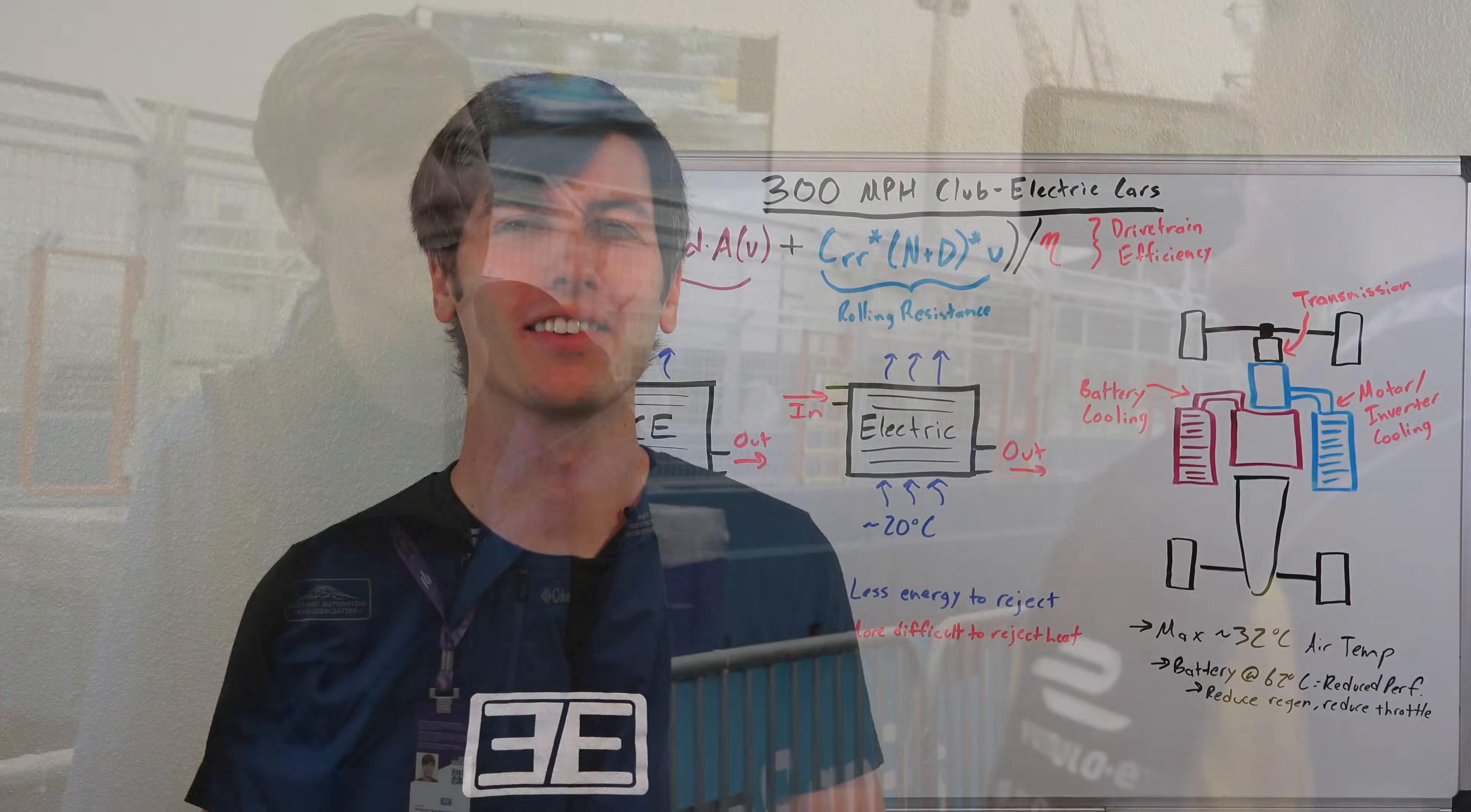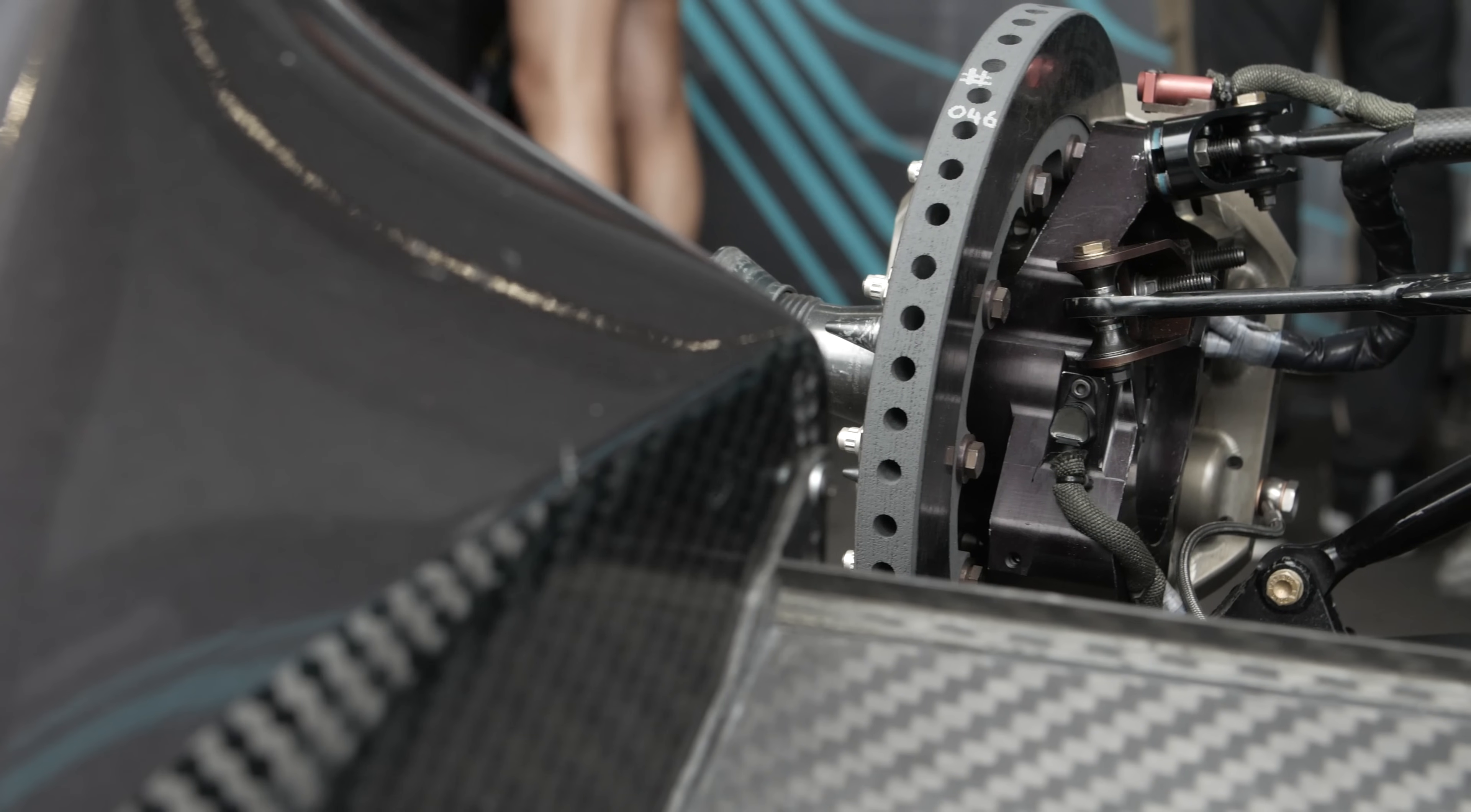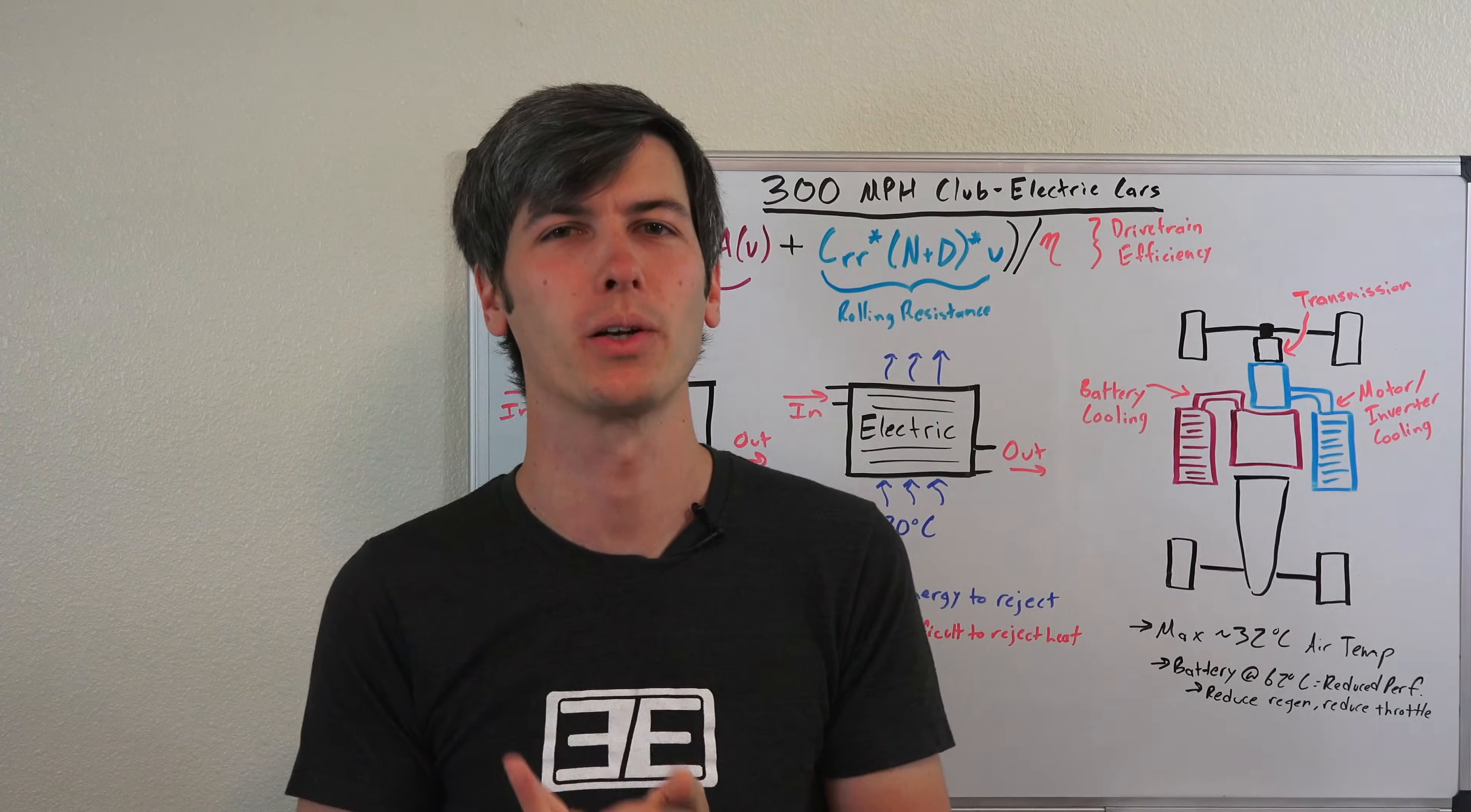Hello everyone and welcome. This is the fourth of a five-part series where I've partnered with Formula E to talk about electric car technology. And in this video we're answering the question, could an electric production car be the first to hit 300 miles per hour?